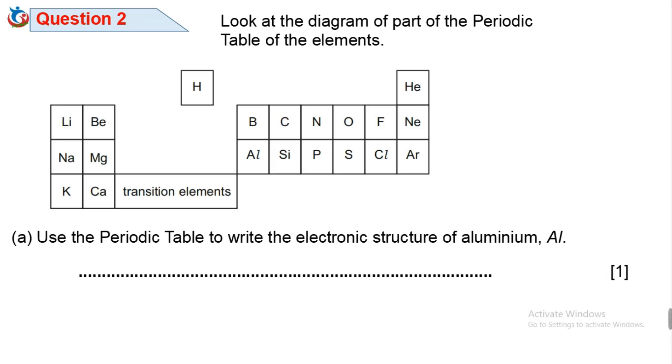Question 2. Look at the diagram showing part of the periodic table of elements. A. Use this periodic table to write the electronic structure of aluminum. When you have a periodic table question, the first thing to do is to number the elements according to the atomic number. From the numbering, aluminum is number 13.